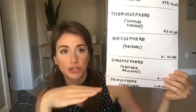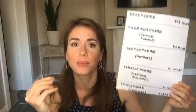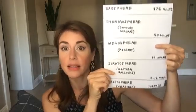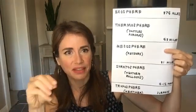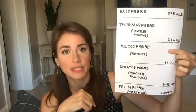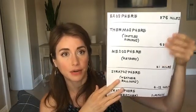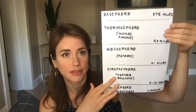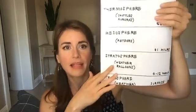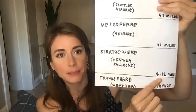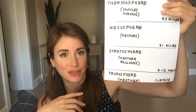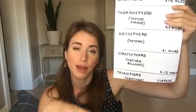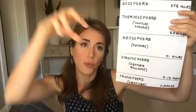Below the thermosphere is the mesosphere, starting roughly about 30 miles from the Earth's surface. This is where the atmosphere begins to get a little thicker with more molecules, and for that reason it's the layer where meteors appear and burn up — meteoroids enter the atmosphere and burn up starting in the mesosphere. Below that is the stratosphere, which begins roughly 4 to 12 miles up depending on whether you're at the equator or the poles. Weather balloons sent up daily by the National Weather Service travel all the way up through the troposphere and into the stratosphere.